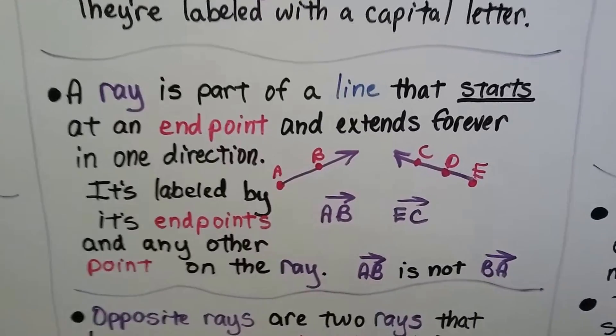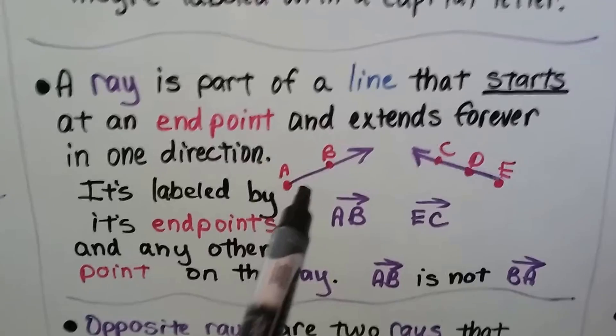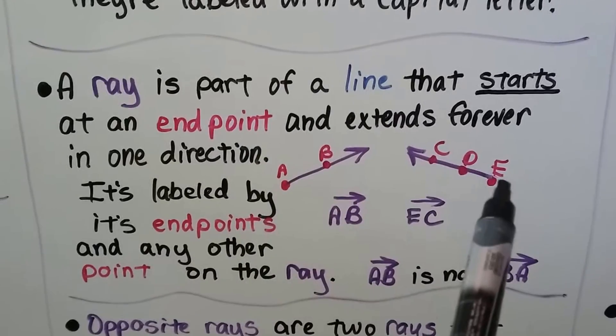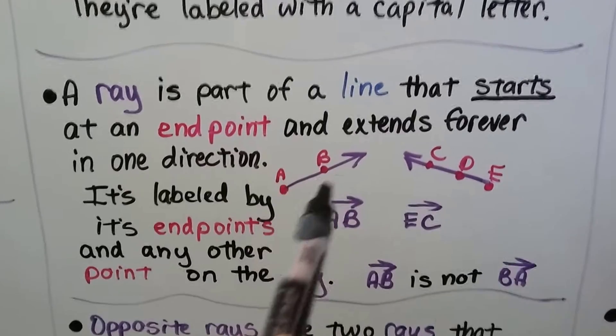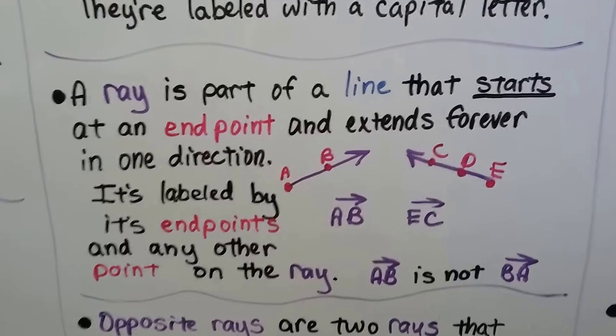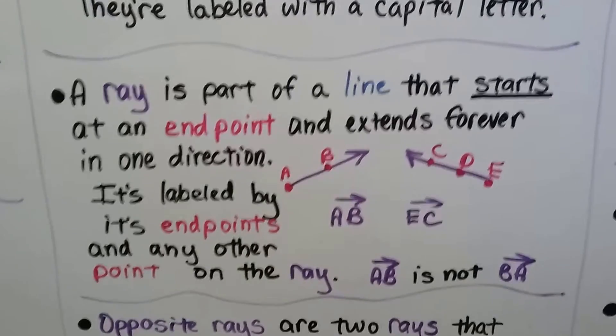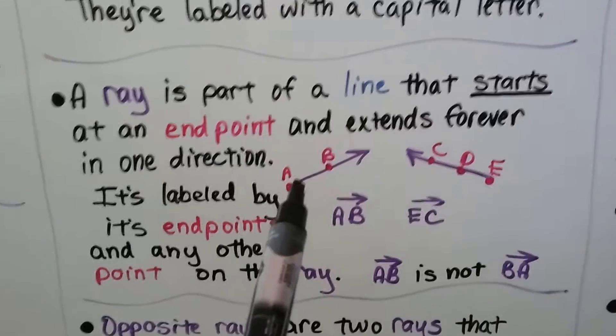A ray is part of a line that starts at an endpoint and extends forever in one direction. It starts at an endpoint and extends forever in one direction. So it's got an endpoint and then an arrow at the other end. And it's labeled by its endpoints and any other point on the ray. So this is ray AB.